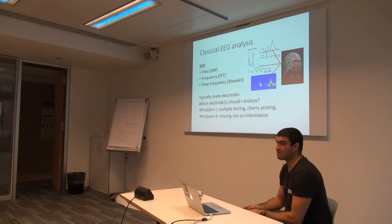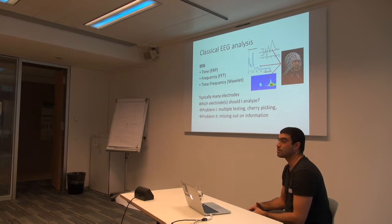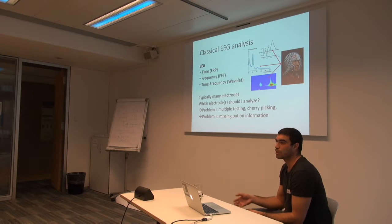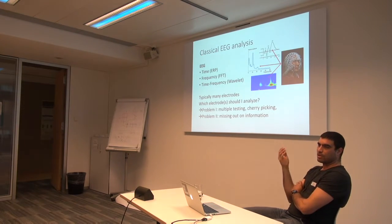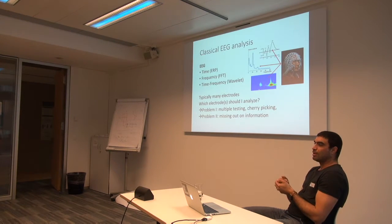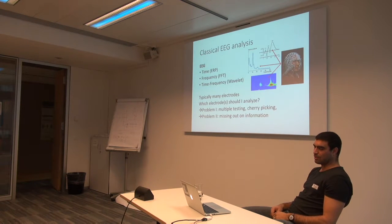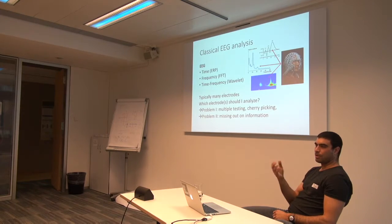In the past probably 10, 20 years, there has been a huge development in EEG hardware. With this, high-density EEG systems became more and more popular — we're talking about more than 200 electrodes on the scalp. This brings us to a problem: which electrodes should we look at? This gives us also the freedom to choose those electrodes which give us the strongest effects, so it might be tempting to just do some cherry picking. On the other side, if you do it properly, you have the problem of multiple testing.